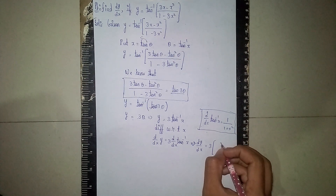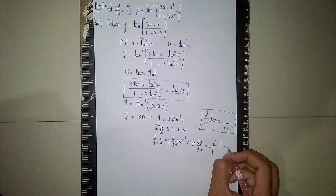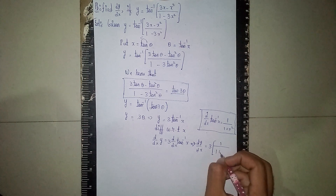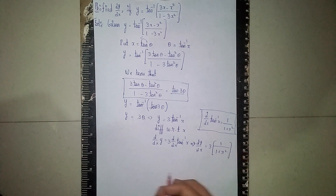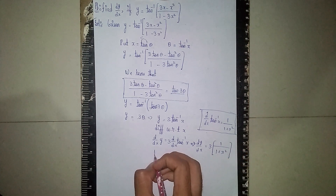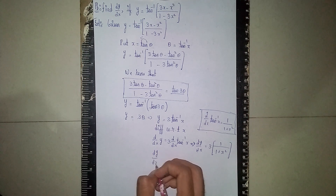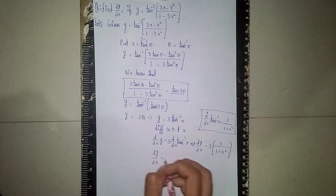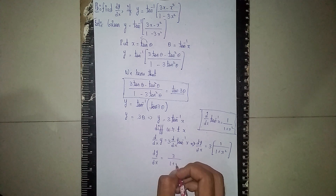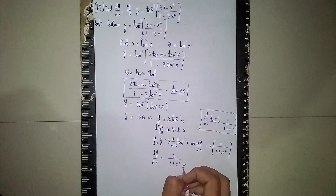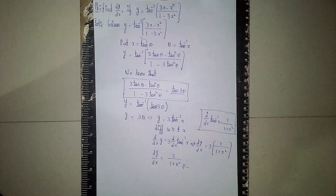So it becomes 3 times 1 by (1 plus x squared). At last, our answer is dy/dx is equal to 3 by (1 plus x squared). This is our solution and our answer. Thanks for watching.